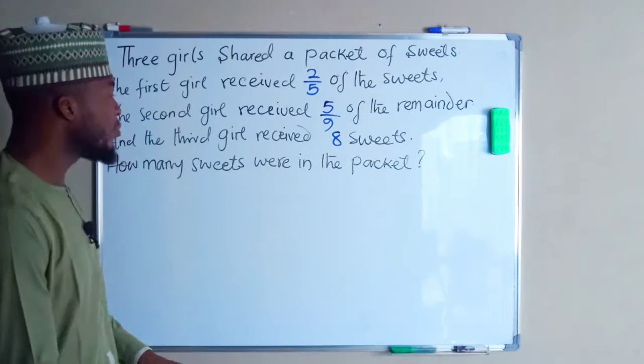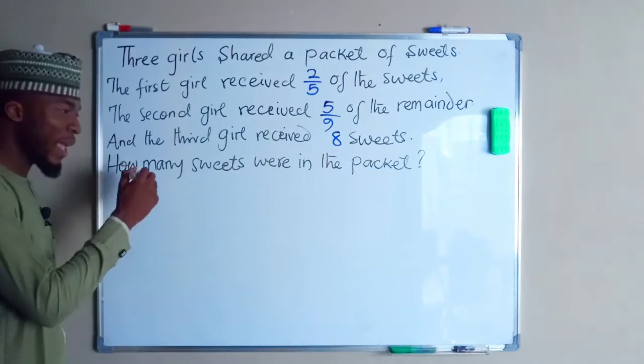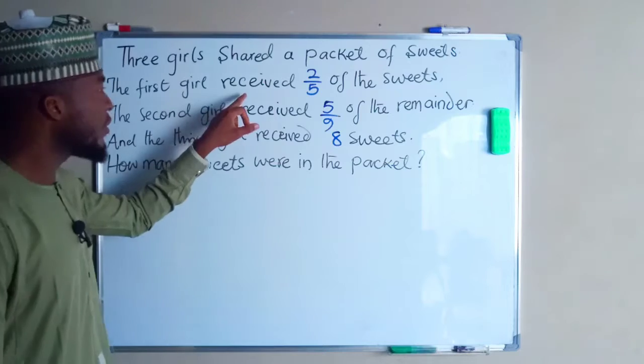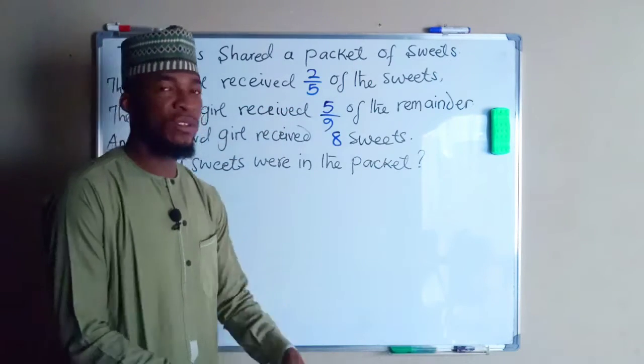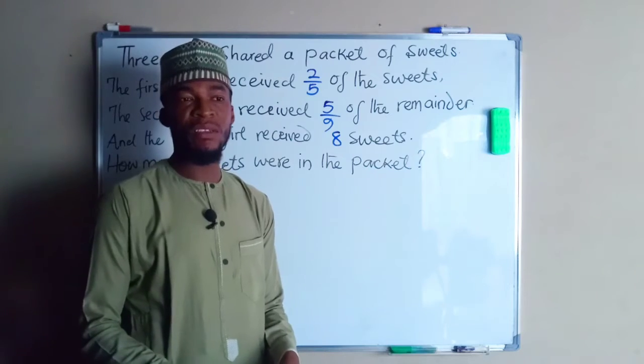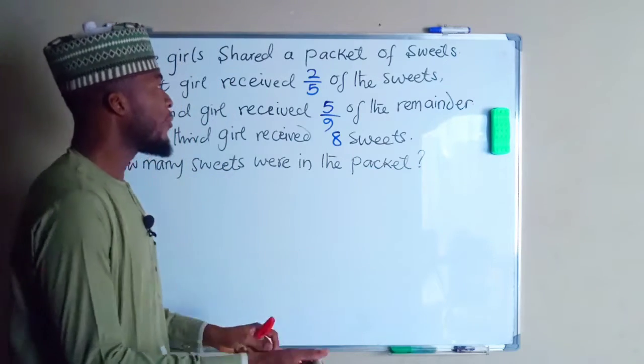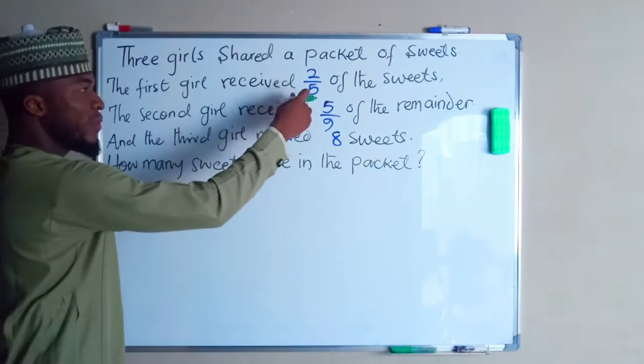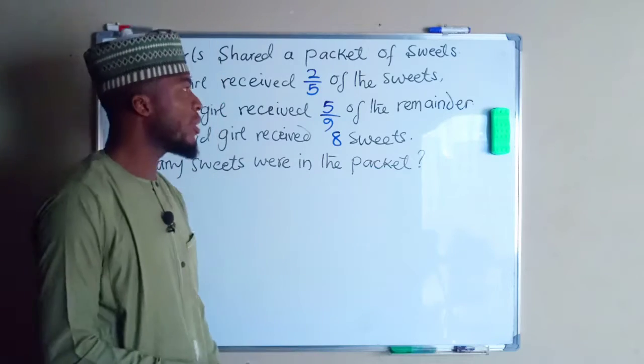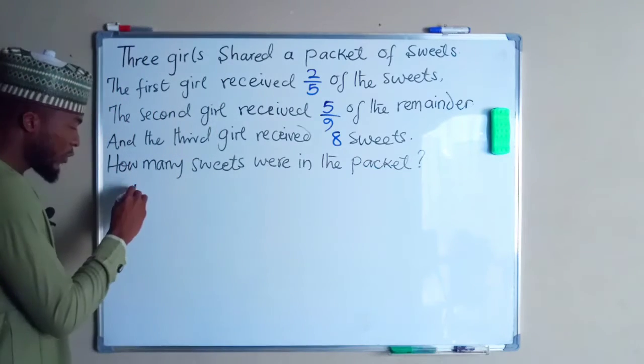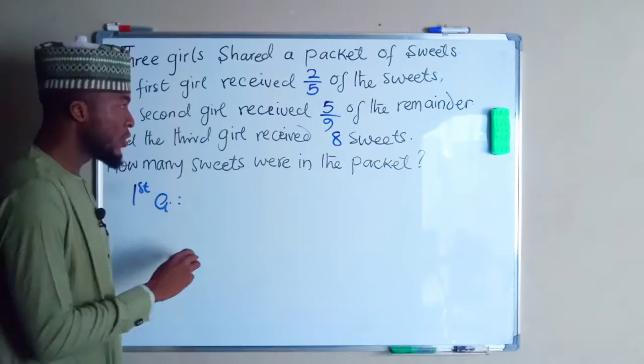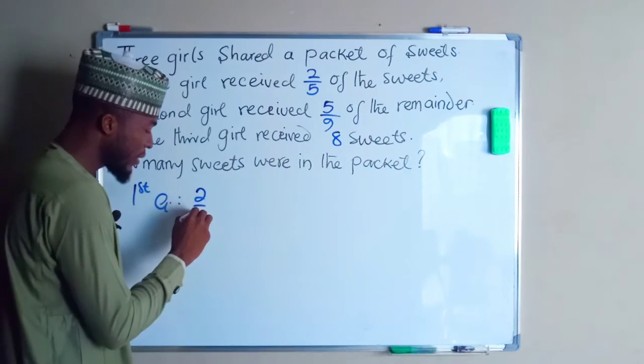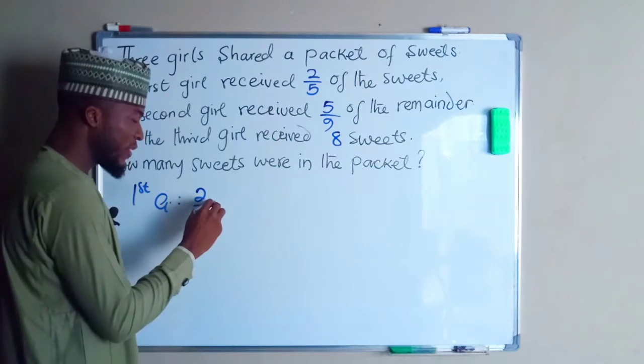The first girl received 2/5 of the sweets. So because I have already declared the number of sweets to be X, I'm going to take 2/5 of the total number of sweets which is X. So the first girl receives 2X/5. This is the first share.